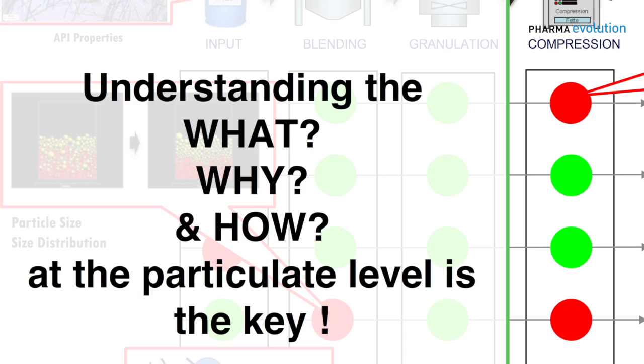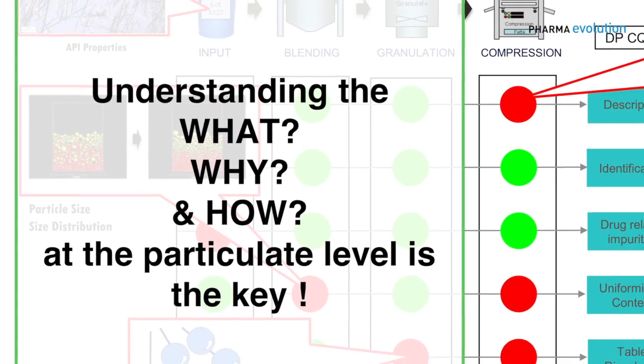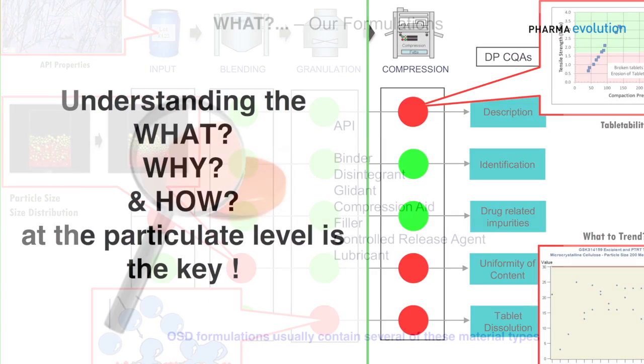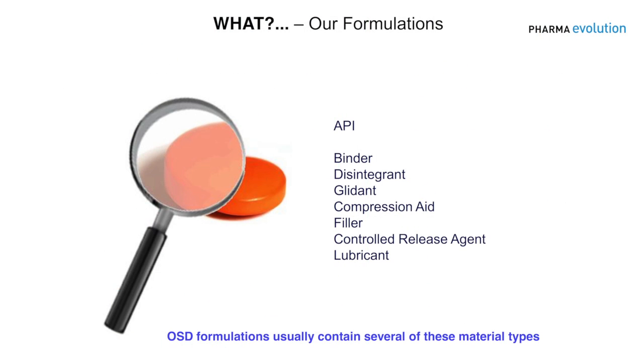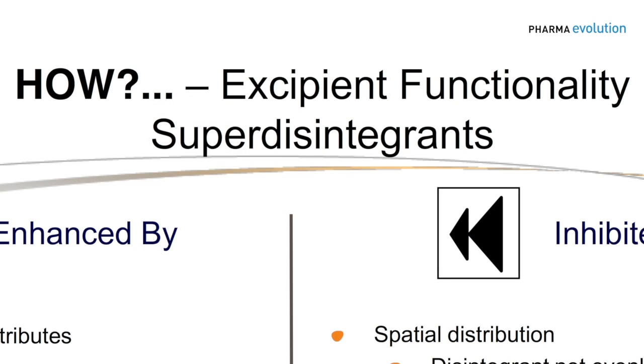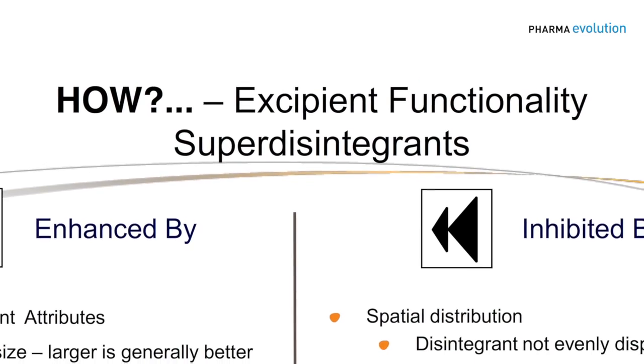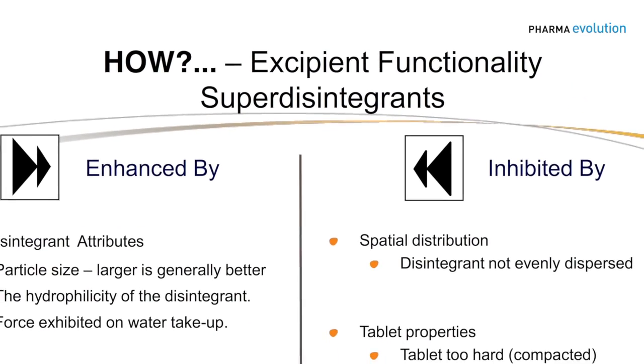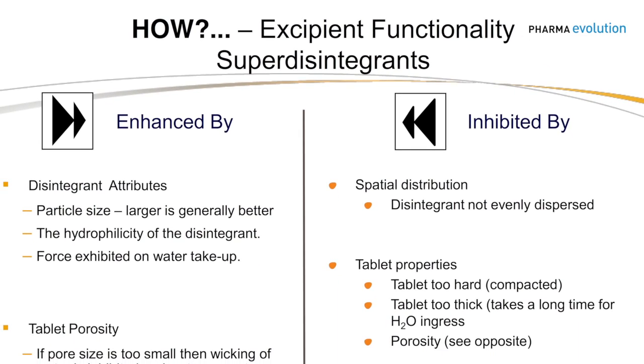We haven't really paid enough attention to the materials that we incorporate into that process. We need to be able to understand how the different particles that we're using fit together to form our dosage form, and we need to know why we're using those particles — why are we using those excipients and active drugs in that formulation, and how do they go about performing their function?